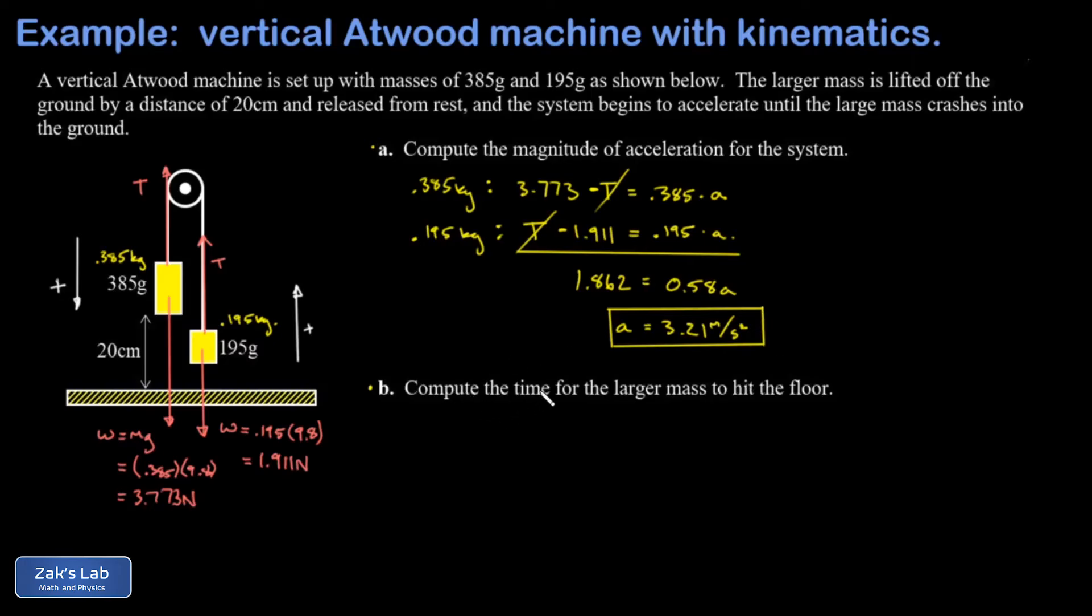Next we get into our kinematics equation. I want the time it takes for the larger mass to hit the floor and we know that it has 20 centimeters to go and we know it was released from rest. I'm going to put the origin for the motion of the large block at its starting position and call that y equals zero, and I'm going to use downward as positive. That means the final position is plus 20 centimeters or 0.20 meters.